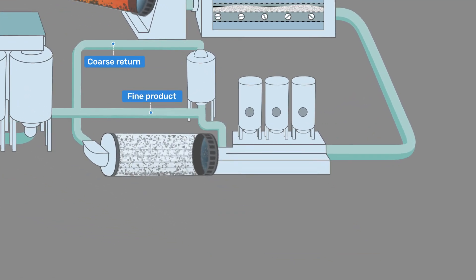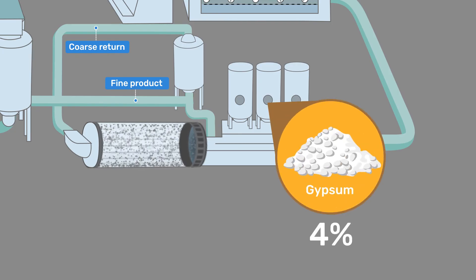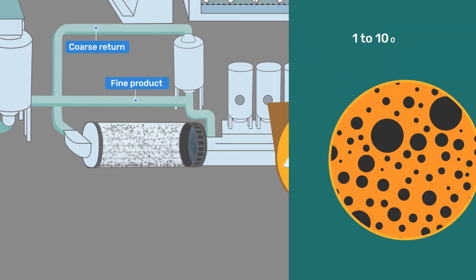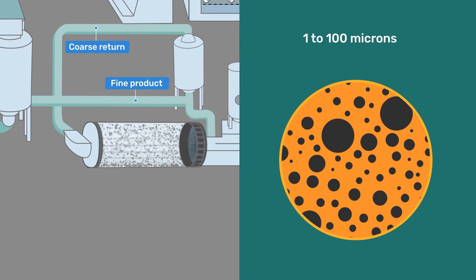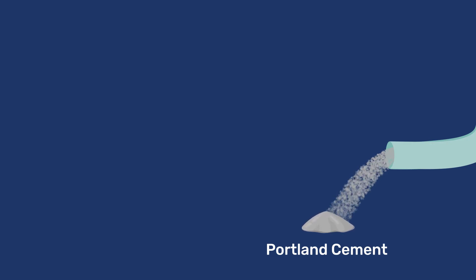After cooling, clinker, together with about 4% gypsum, is ground to a fine powder. These fine enough particles have diameters between 1 and 100 microns. For means of comparison, human hair ranges from about 18 to 180 microns. The ground mix of clinker and gypsum is known as Portland cement, often also called ordinary Portland cement.